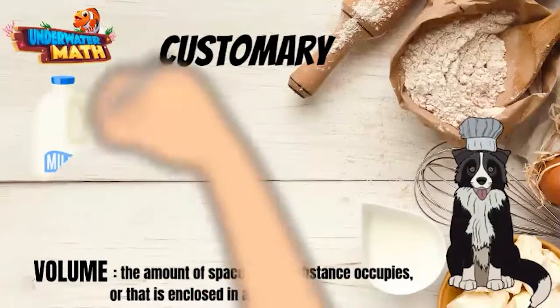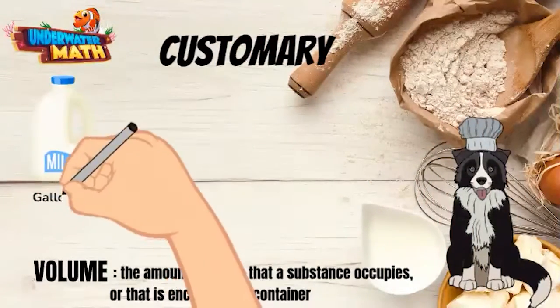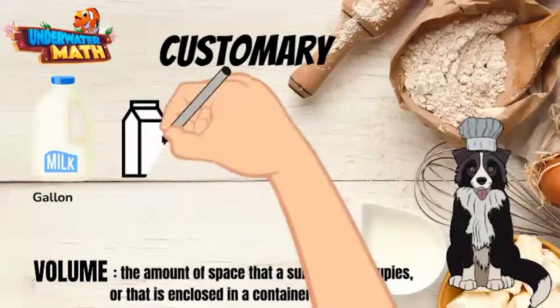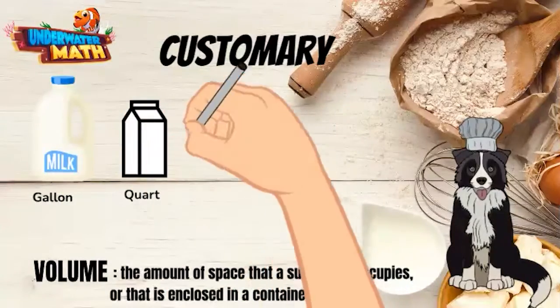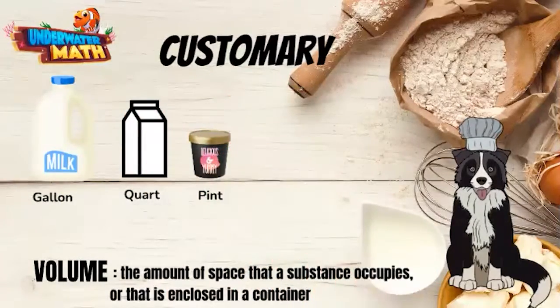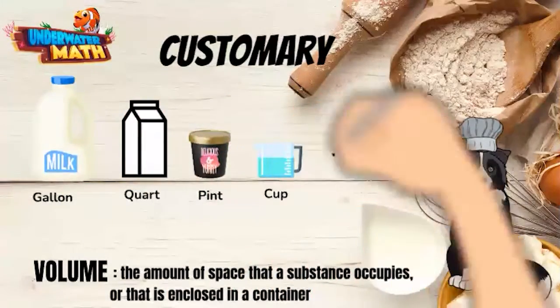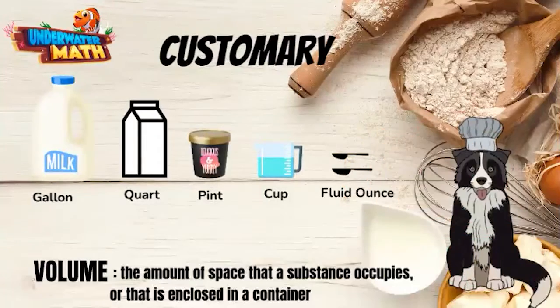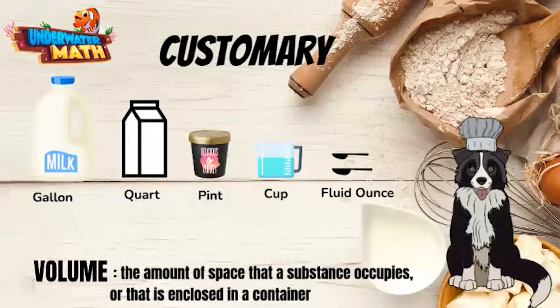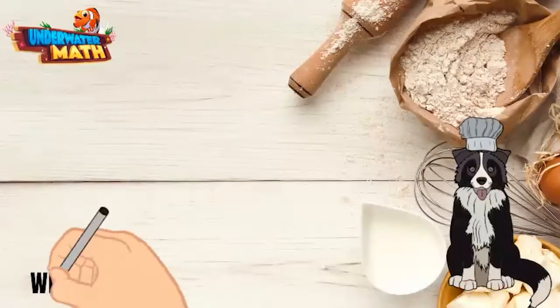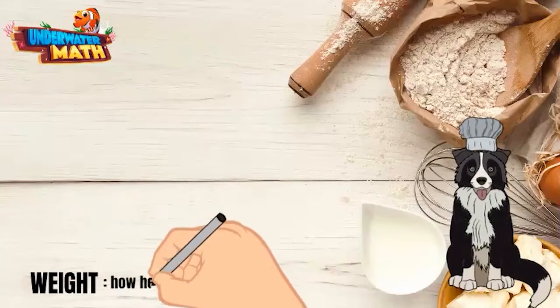Customary units are things like gallons, like a gallon of milk; quarts, like a carton of orange juice; pints, like a pint of ice cream; cups; and fluid ounces, which is about the volume of two tablespoons.